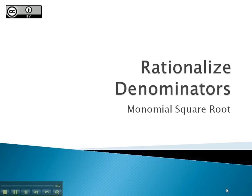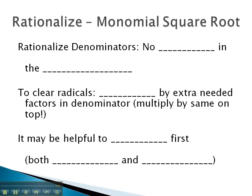In this video, we will look at rationalizing denominators that have a monomial square root. What we mean by rationalizing the denominator is we want to have no radicals in the denominator or bottom of the fraction.